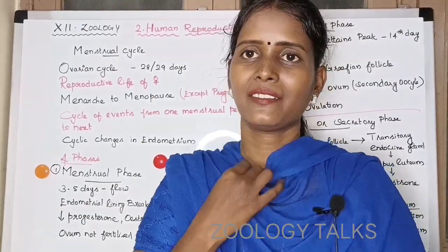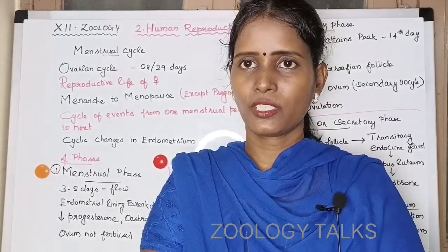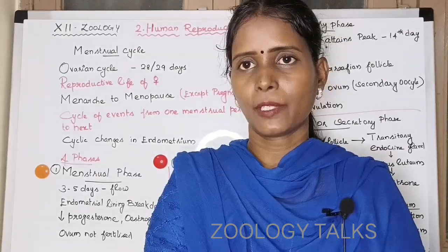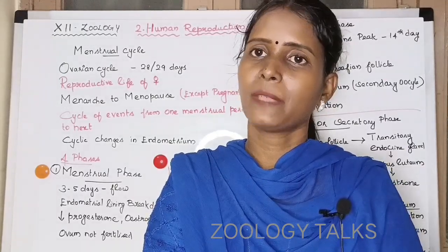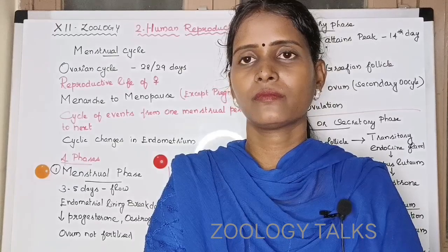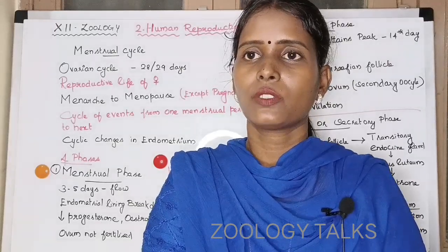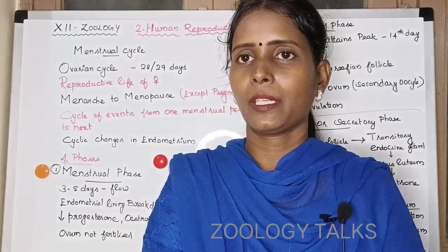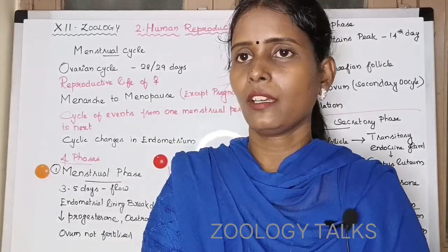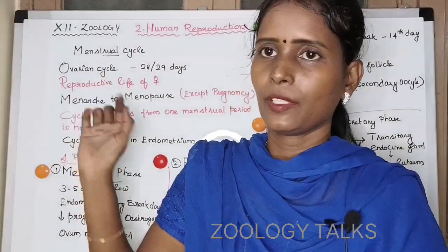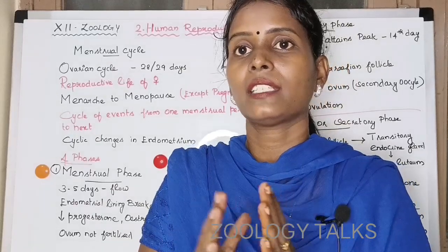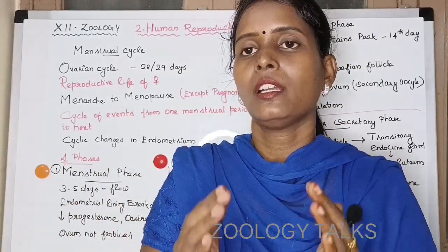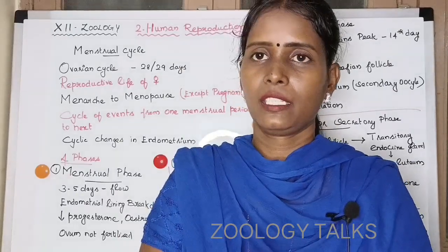Hello friends, welcome to Zoology Talks channel. In this video, we will talk about the 12th Zoology Chapter 2 Human Reproduction — the Menstrual Cycle, a very important topic. The menstrual cycle is also called the ovarian cycle. Its duration is 28 or 29 days.